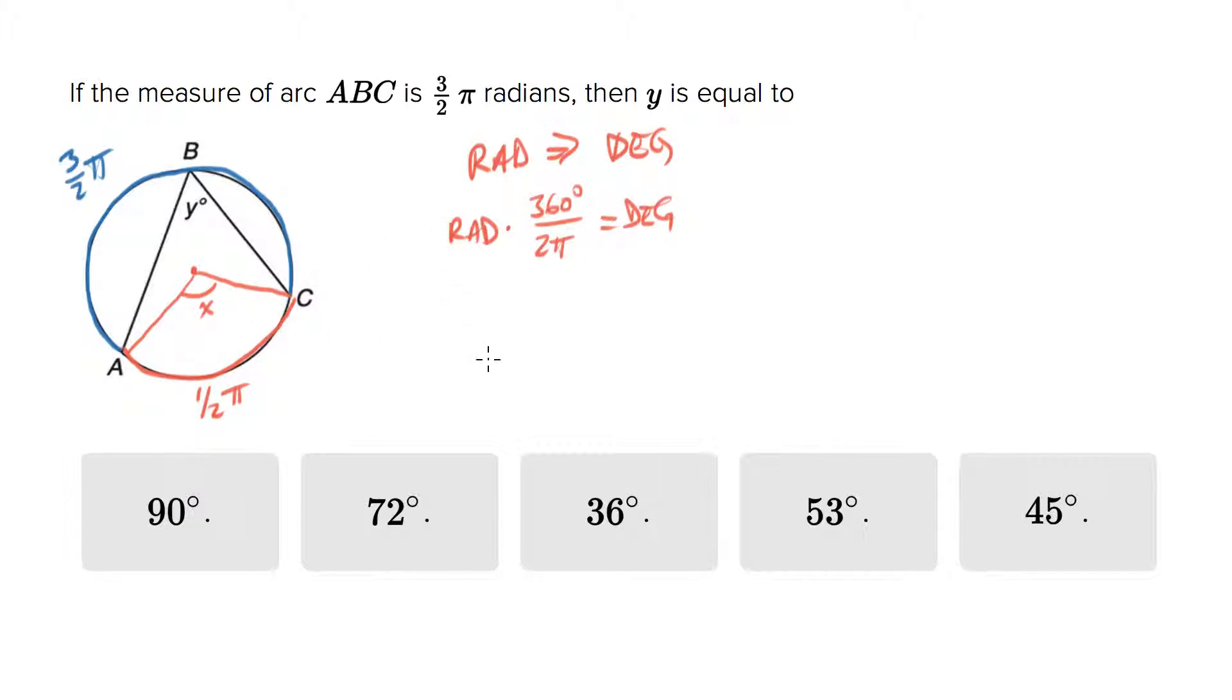So we'll do 1.5π radians times 360 over 2π. Then we'll eliminate the π's. We've got 4 in the denominator, so divide 360 by 4 and you'll get 90. So 90 degrees is the measure of angle X.